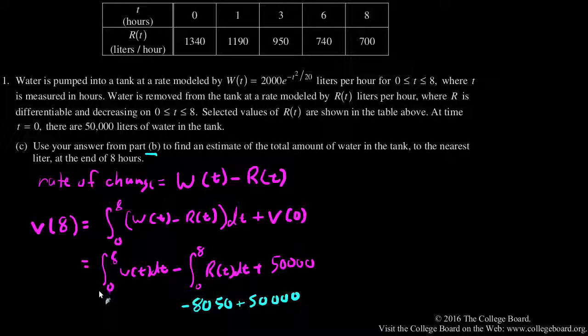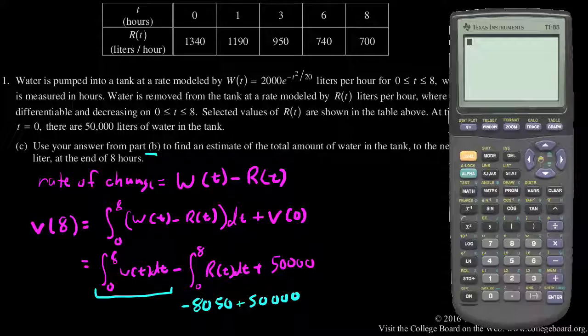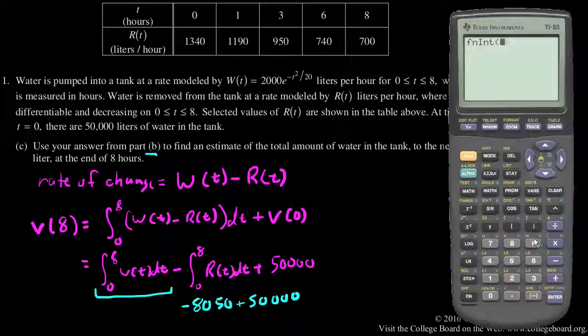And I'm just going to put this along with that into my calculator. So let me flip over to the calculator. I want to do the integral of this function, so 2,000 e to the x squared over 20. I'm going to evaluate that over the variable x, going from 0 to 8. So that's the integral part.